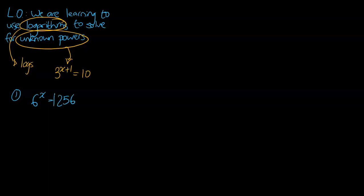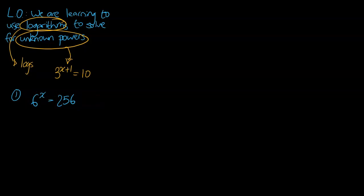Some of you might be tempted to change 256 to like x to the power of something. We don't need to do that — we can go ahead and do logs. So unknown power means we're going to log that side. I'm going to write log(6^x).